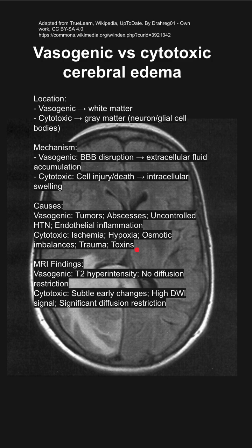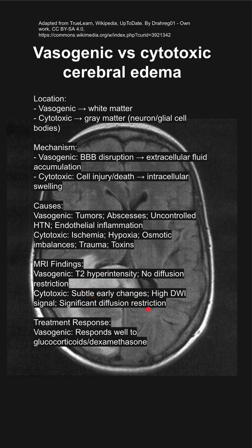MRI findings. In vasogenic you have T2 hypersensitivity with no diffusion restriction. In cytotoxic you have subtle early changes and you can have significant diffusion restriction.